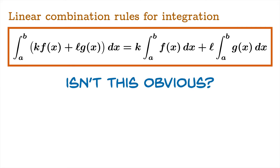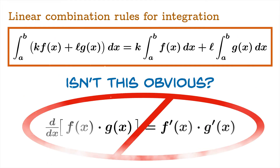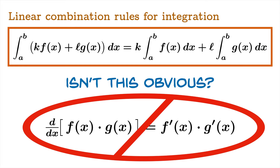You may have the question, isn't this obvious? You've got to be careful, because you've seen other natural-looking formulas that don't work. For example, it looks quite natural to assert that the derivative of a product is the product of the derivatives. But we know that's not how the product rule works — looks nice, but it's false. So just because our linear combination rules for integration look nice and obvious, it doesn't mean that they are obvious.